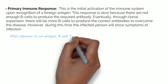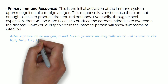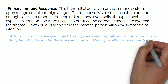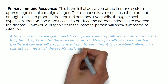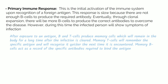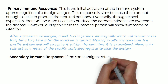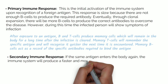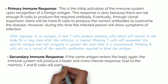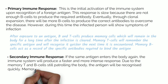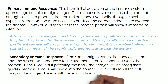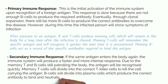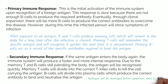After exposure to an antigen, both B and T cells produce memory cells which remain in the body for a long time after the infection is cleared. Memory T cells will remember the specific antigen and recognize it quicker next time it is encountered. Memory B cells act as a record of the specific antibodies required to bind to the antigen. If the same antigen enters the body again, the immune system will produce a faster and more intense response. Memory T cells will divide into the correct T killer cell to kill the cell carrying the antigen, and B cells will divide into plasma cells which produce the correct antibody to bind and neutralize the antigen.